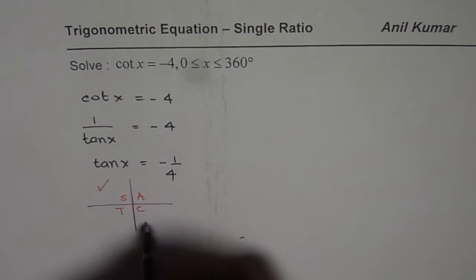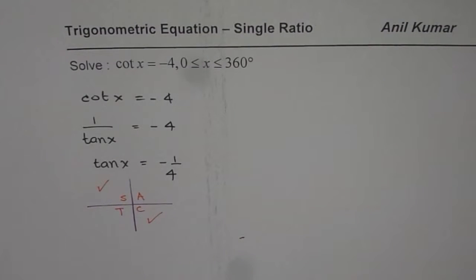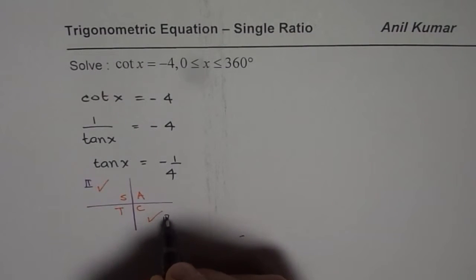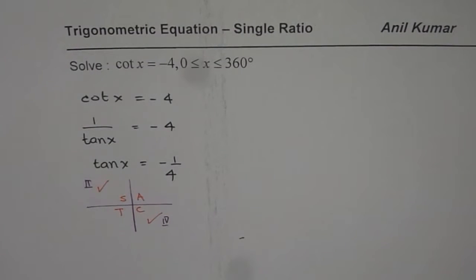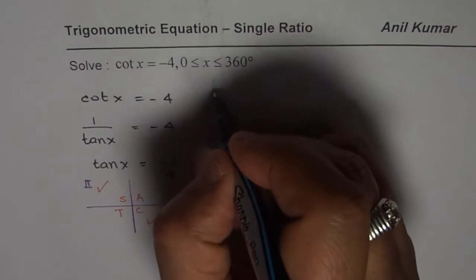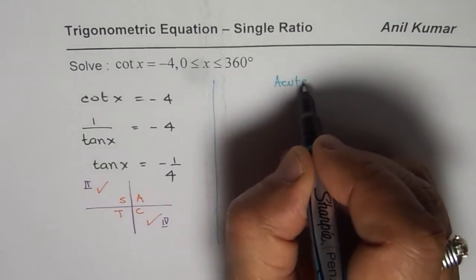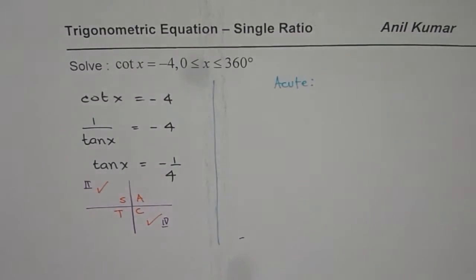Negative value means you are expecting your solution in quadrant 2 or in quadrant 4. So either both of them. So now we will find acute angle first and then we will write down our answer.